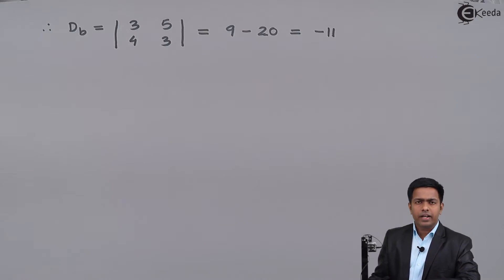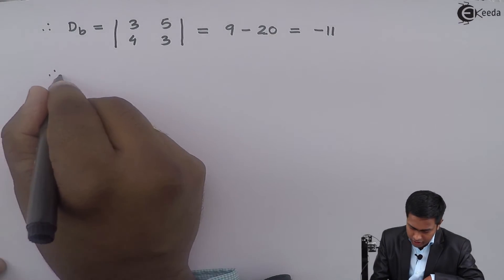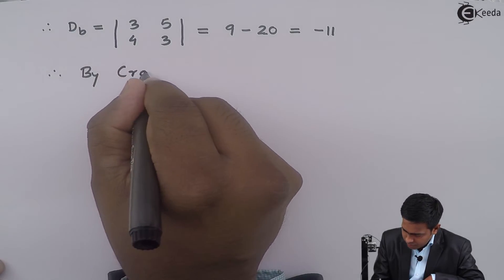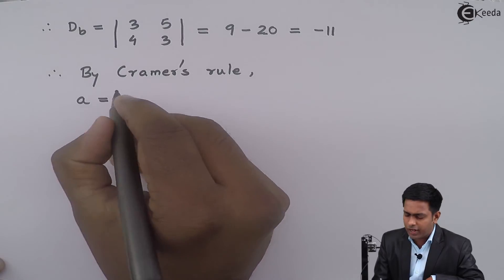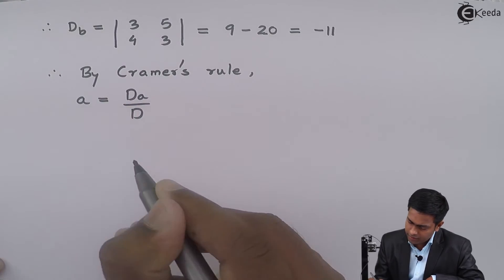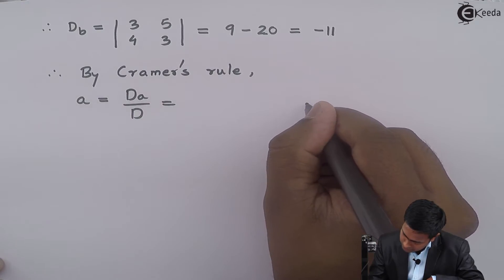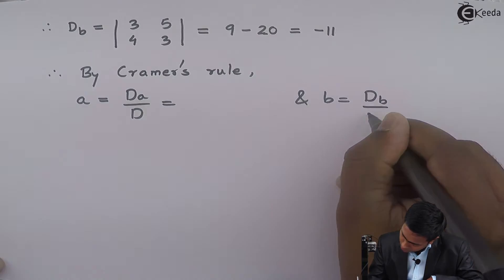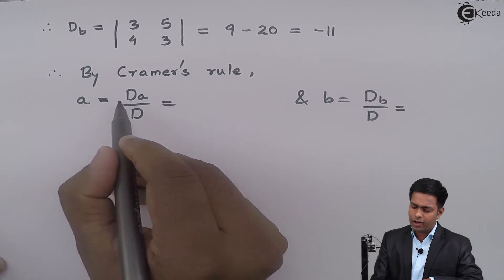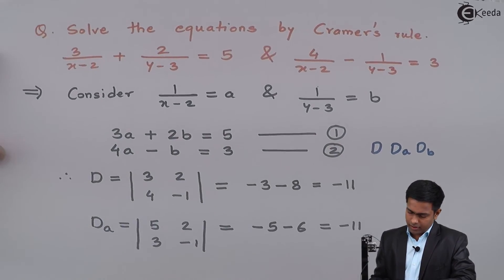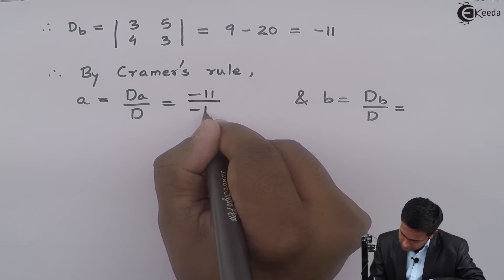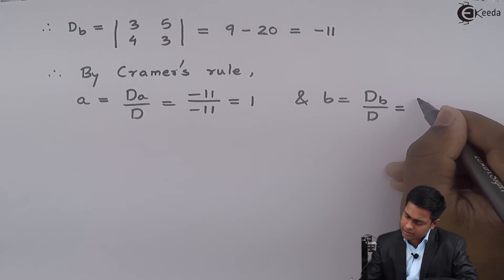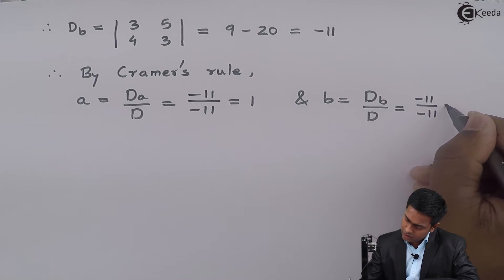So we have got the values of D, DA, and DB. Now by Cramer's rule, A equals DA upon D, and B equals DB upon D. The value of DA is minus 11 and D is minus 11, so A equals minus 11 upon minus 11, which is 1. Similarly, DB is minus 11 and D is minus 11, so B equals 1.